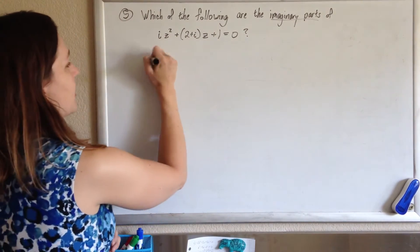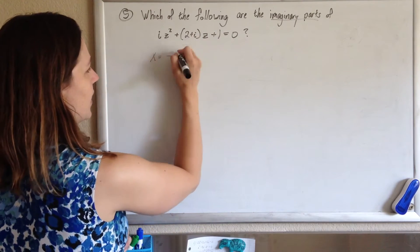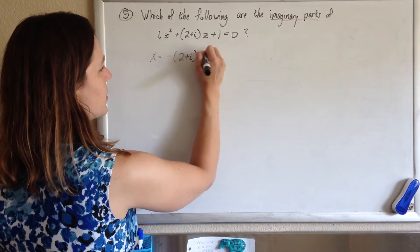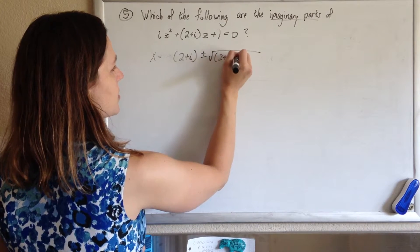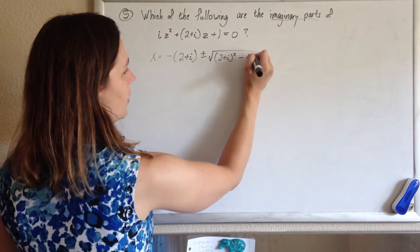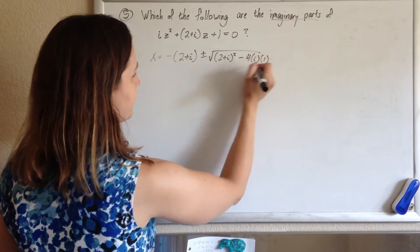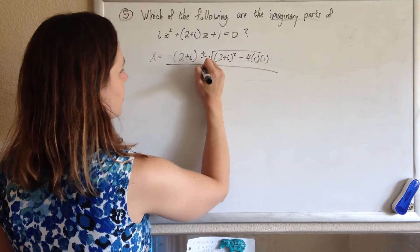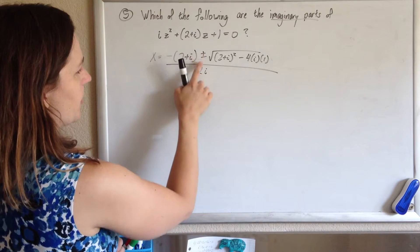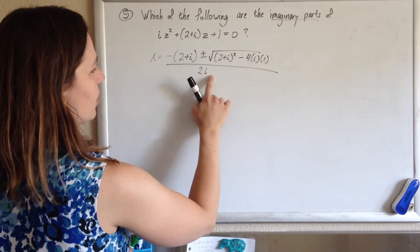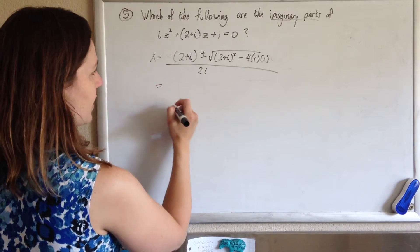So we're going to have x equals negative b, so negative 2 plus i, plus or minus the square root of b squared, so 2 plus i squared, minus 4 times c, which is 1, all over 2a, so 2i. So negative b plus or minus the square root of b squared minus 4ac all over 2a, and there we go.